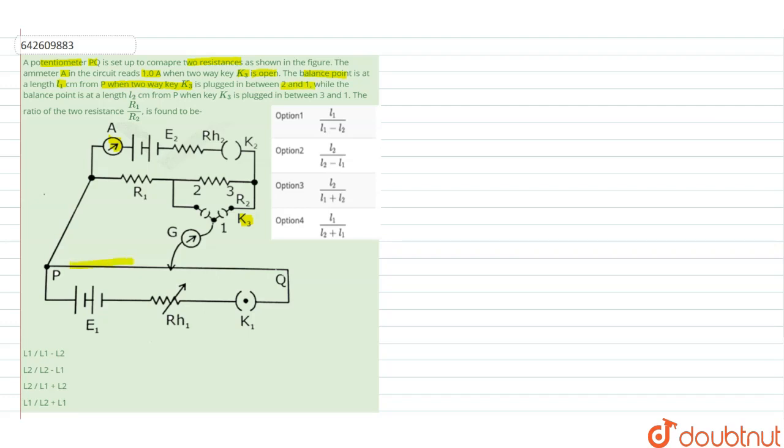P this will be L1 if we are using the key this one. While the balance point length L2 from P when K3 is plugged between 3 and 1, the ratio of the two resistances R1 upon R2 is to be found.